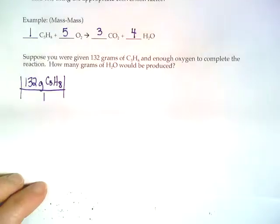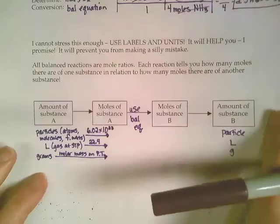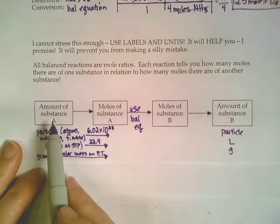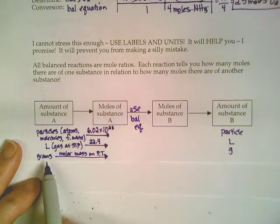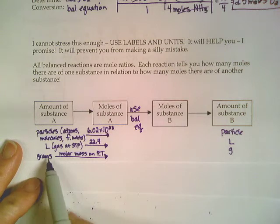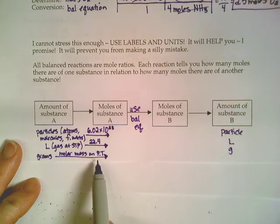Now if we look at our flow chart and say, what are we going to do with that? Our first step is to get that amount into moles. So our substance happens to be in grams right now. To get from grams to moles, we need the molar mass of that substance on the periodic table.